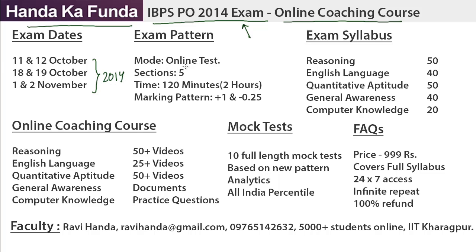The exam, as you might already know, like last year will once again be online. It will have five sections in all and the paper will be 120 minutes or two hours long. You get one mark for every correct answer and minus 0.25 for every incorrect answer. That means you can't guess because if your guess goes wrong, one fourth of the marks will be deducted.